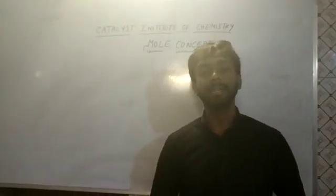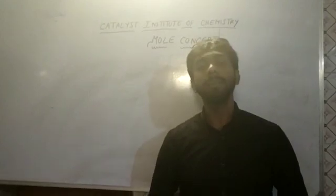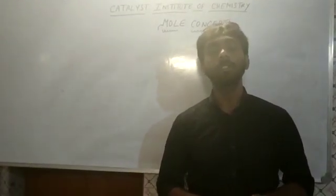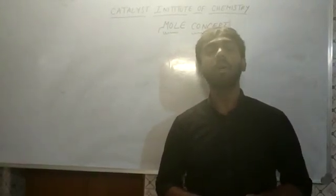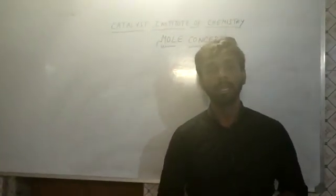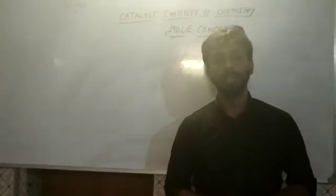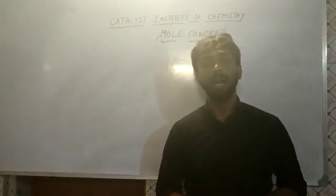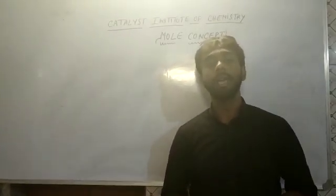Any substance can be classified into three categories: elements, compounds, and mixtures. In the case of elements, the smallest unit is an atom. However, some elements have molecules as their smallest unit — for example, oxygen (O2), hydrogen (H2), and chlorine (Cl2) are non-metallic elements whose smallest unit are molecules. In the case of compounds, the smallest unit is always a molecule.